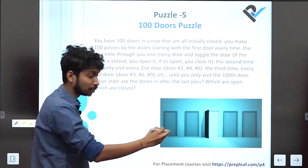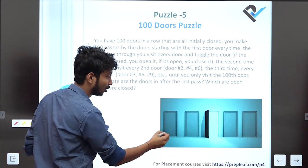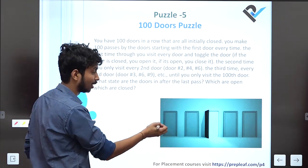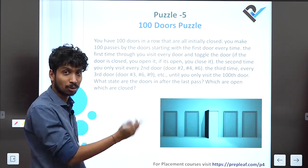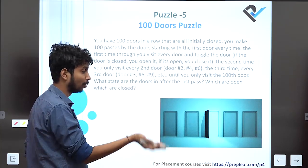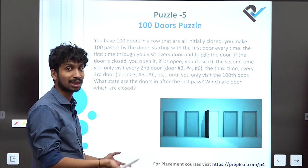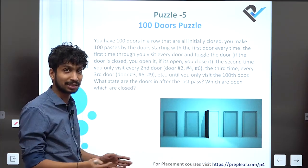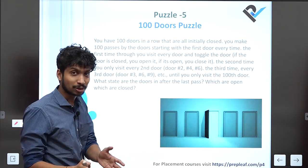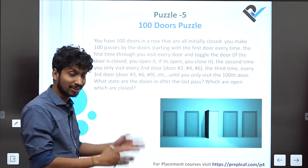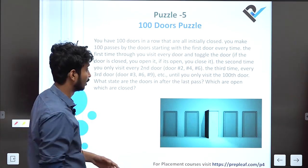We start visiting each door. The first door we visit, we toggle it. Toggle means we change its position — if it is closed, we open it; if it is open, we close it.